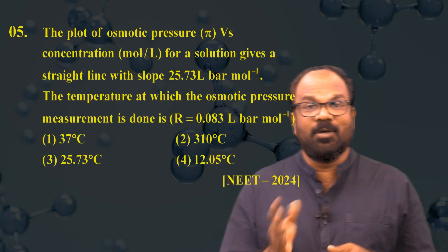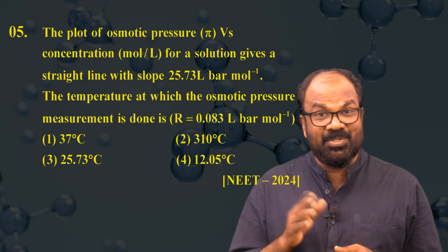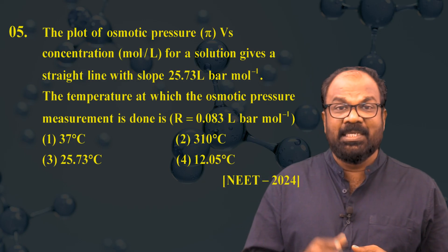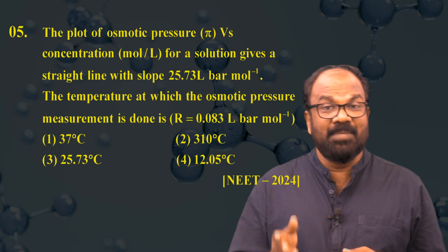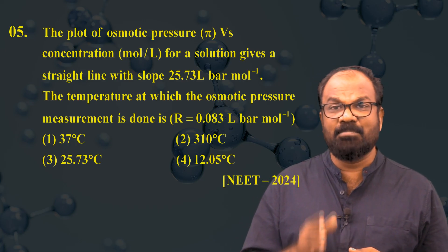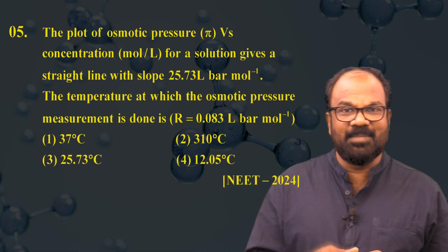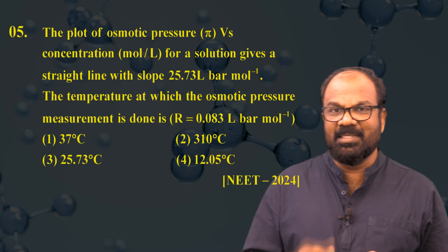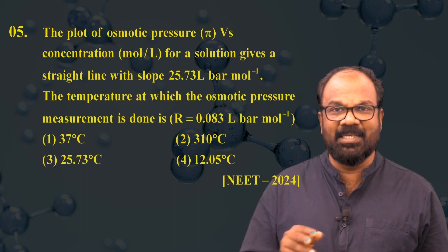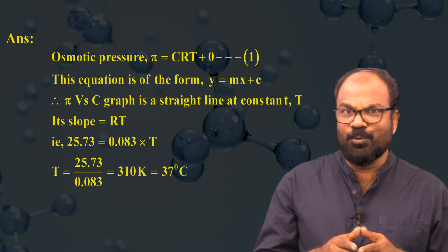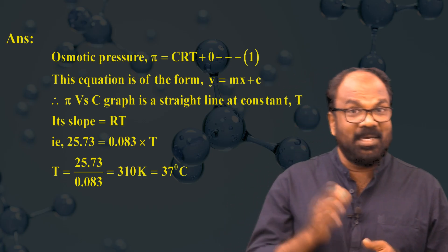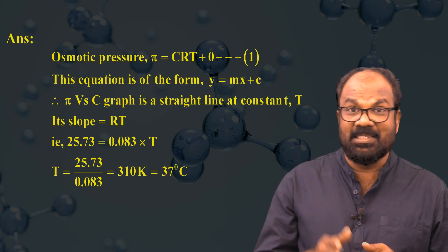Question number five: the plot of osmotic pressure (π) versus concentration (in mol/L) for a solution gives a straight line with slope 25.73 L·bar·mol⁻¹. The temperature at which the osmotic pressure measurement is done is — given R = 0.083 L·bar·mol⁻¹·K⁻¹. Options: (1) 37°C, (2) 310°C, (3) 25.73°C, (4) 12.05°C. The equation for osmotic pressure is π = CRT, where C is concentration, R is the gas constant, and T is temperature in Kelvin.